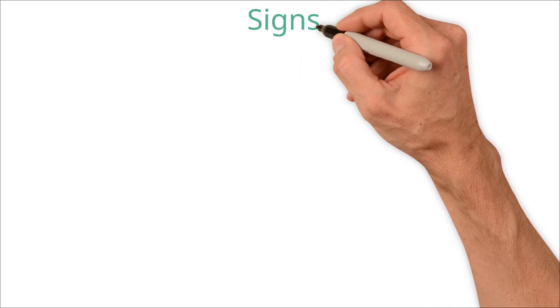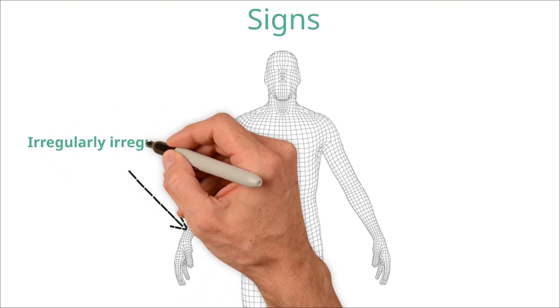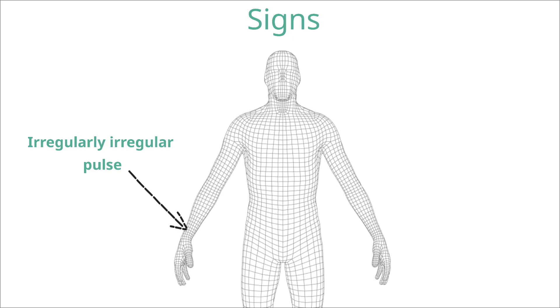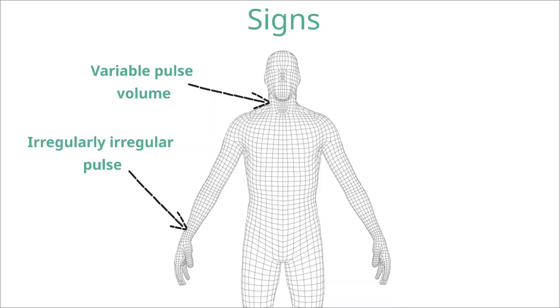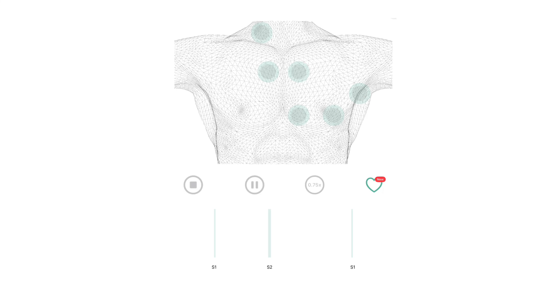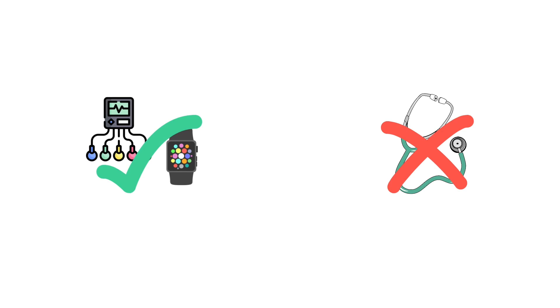The most obvious sign on examination is an irregularly irregular pulse, with no pattern to the irregularity and variable pulse volume — beats with a longer R-to-R interval will be more forceful as the left ventricle has had longer to fill. AF can also be appreciated by auscultation with a stethoscope. However, remember that AF can only be formally diagnosed with an ECG, and not from examination alone.